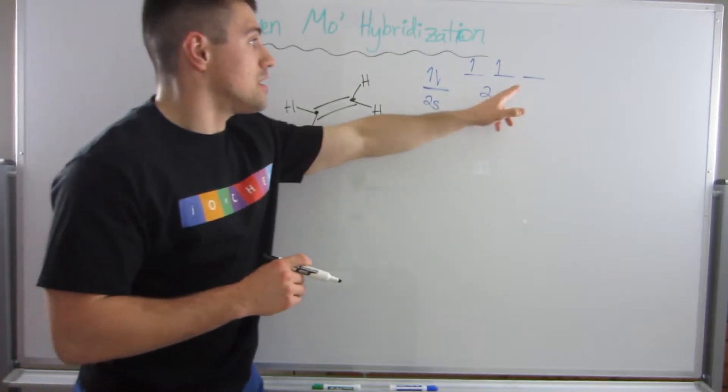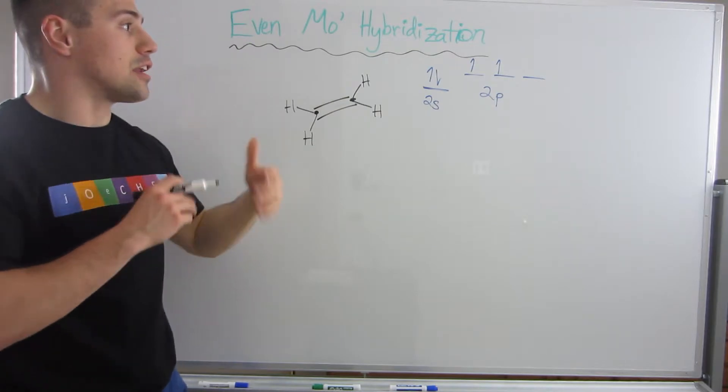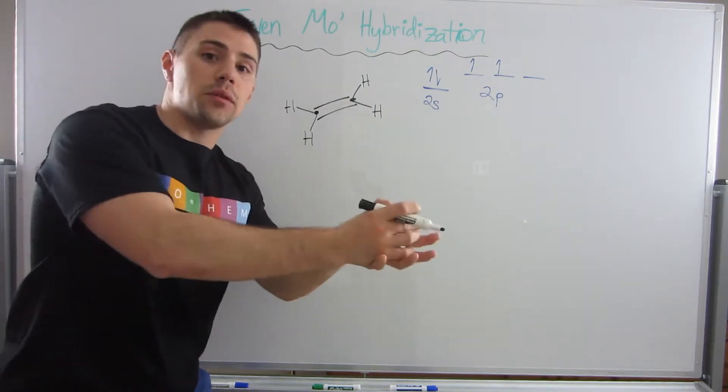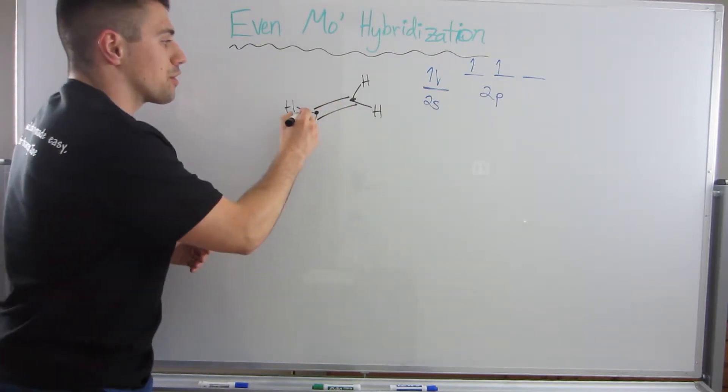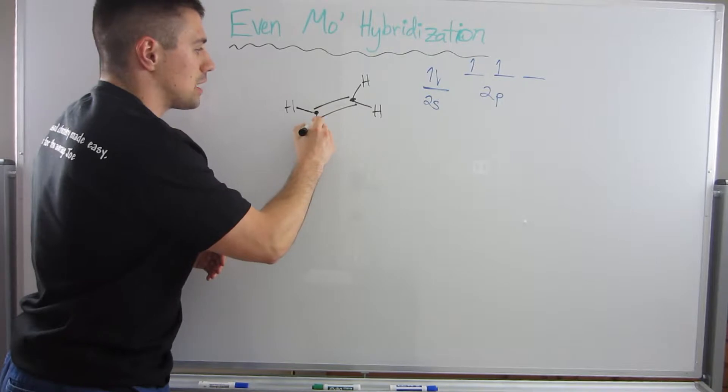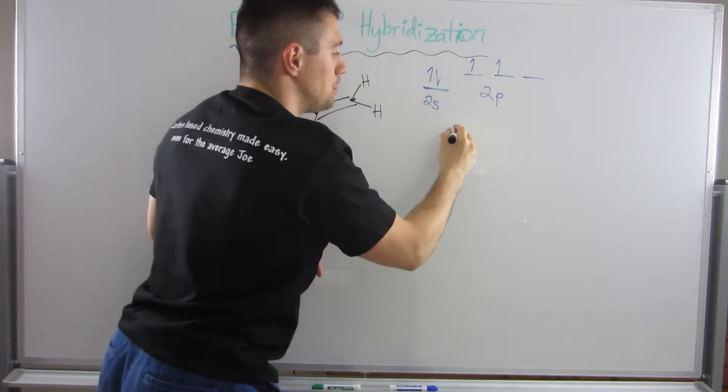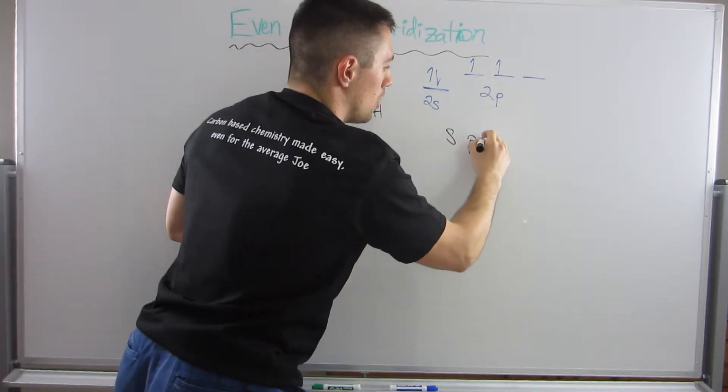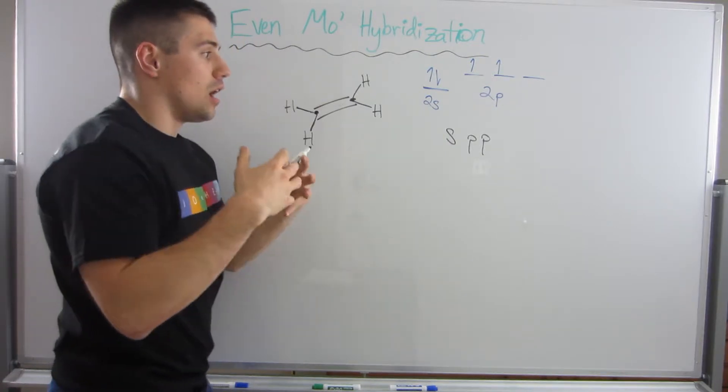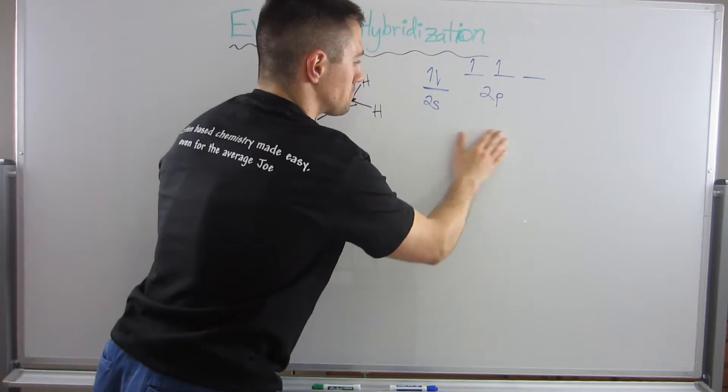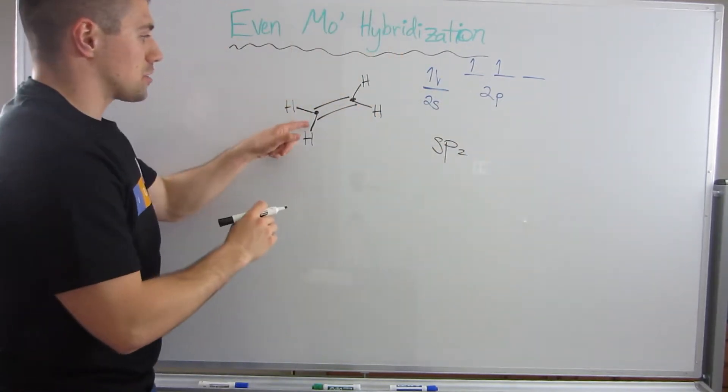If this 2p is empty, these two are ready to become part of a bond. In a covalent bond, one atom brings one electron to the table, the other atom brings another electron, and then they bond. We need three bonding areas, so we're going to take one s and two 2p orbitals and smash them together to make sp2 hybrid orbitals.